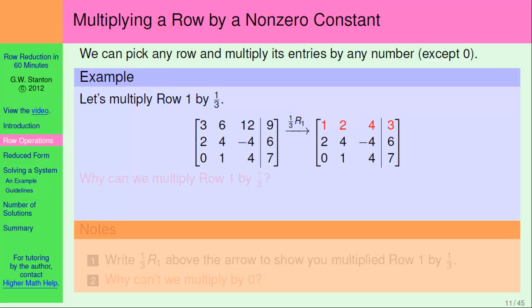Okay, one question you might ask yourself at this point is, why can I just multiply a row by whatever I want, and we can go ahead and answer that question. So why can we multiply row one by one-third? Well, remember that each row just represents an equation, so let's take a look at what we just did in the context of equations.